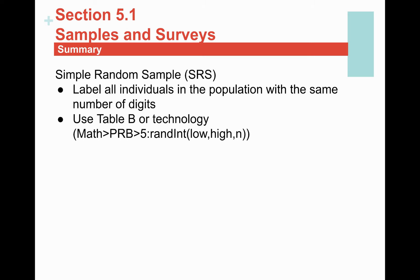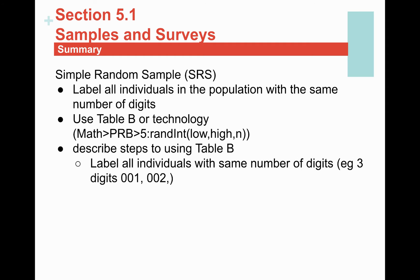All individuals must have the same number of digits in their label. Then I simply use Table B — the table of random digits — or I use my calculator. Although the calculator says it's a random number generator, it's not technically random; it follows a computer algorithm. It is pseudo-random — it emulates something that is random. Table B in the textbook truly is random. When using Table B, we also have to describe the steps we took on any exam, quiz, or homework.